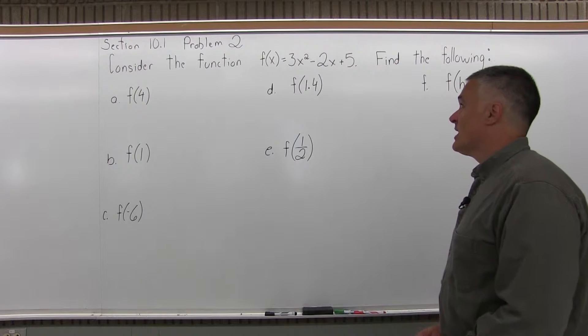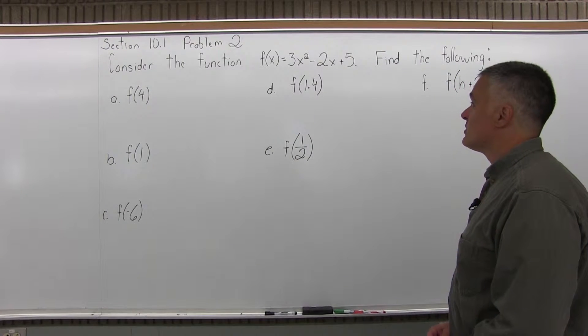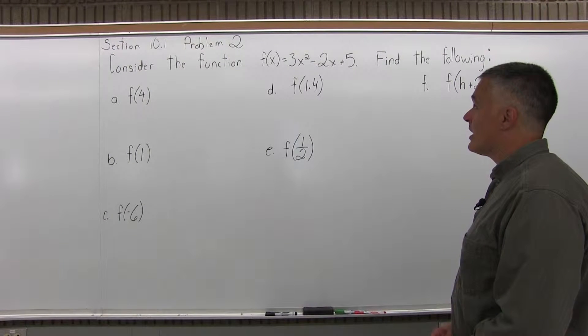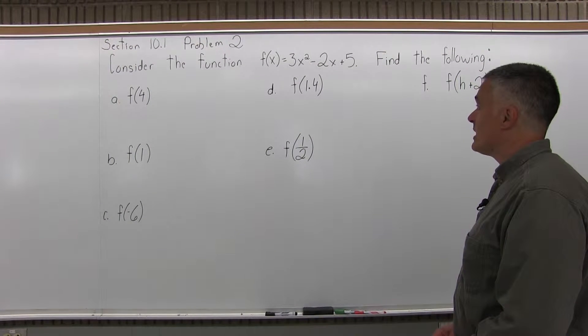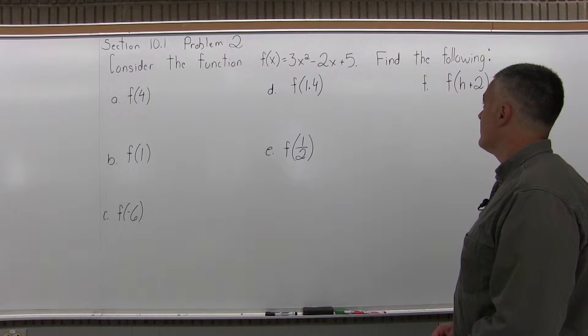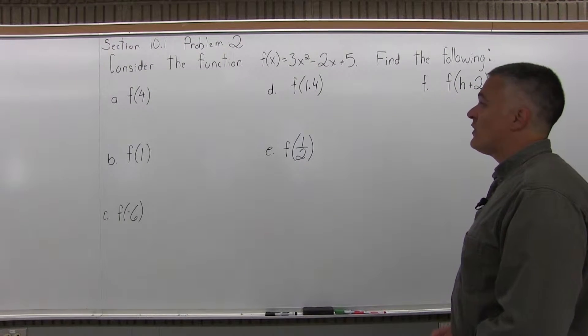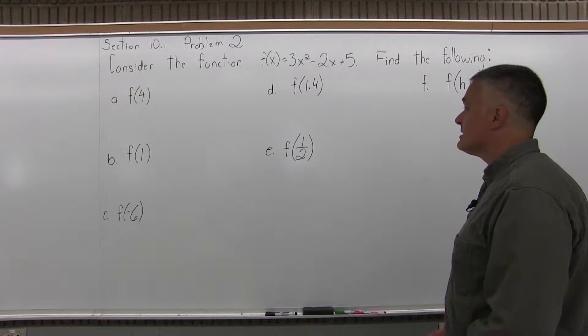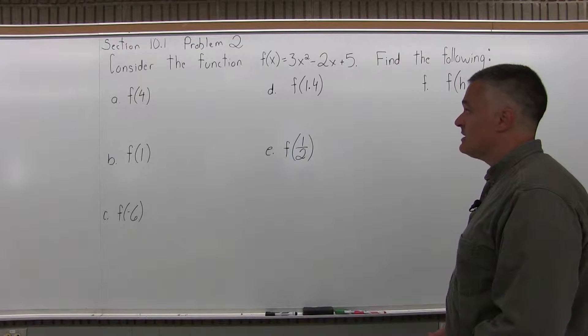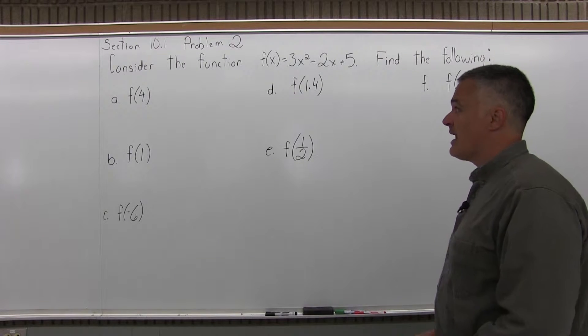It says consider the function f of x equals 3x squared minus 2x plus 5 and find the following. There are six parts: a, b, c, d, and f.